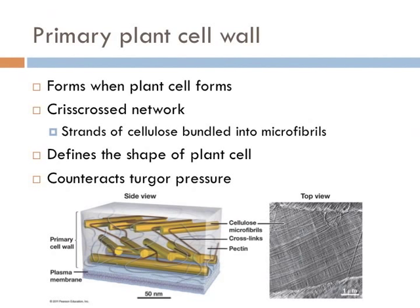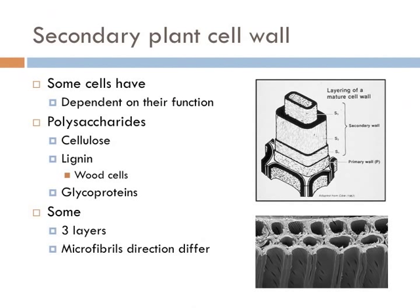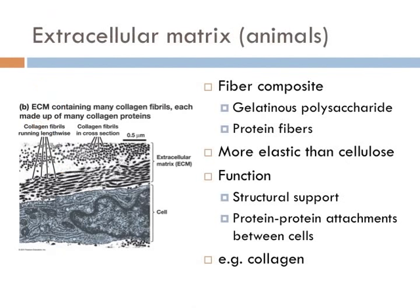The secondary cell wall is a structure found in many plant cells. It's located between the primary cell wall and the plasma membrane. The cell starts producing the secondary cell wall after the primary cell wall is complete and the cell has stopped expanding. The secondary cell wall consists mainly of cellulose, but also has other polysaccharides, lignin, and glycoproteins. It sometimes consists of three distinct layers where the direction of the cellulose microfibrils differs between the layers.